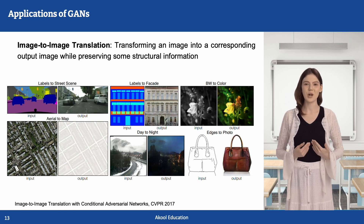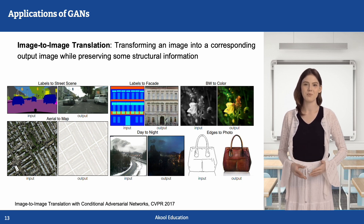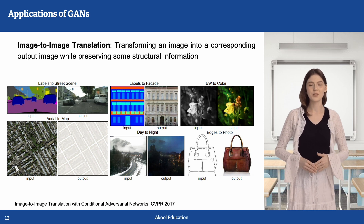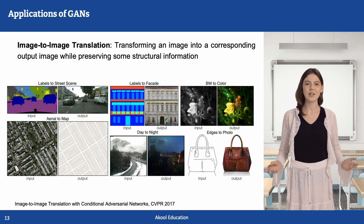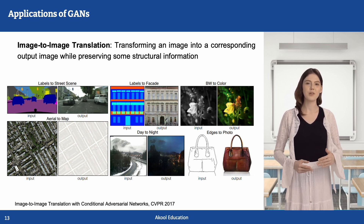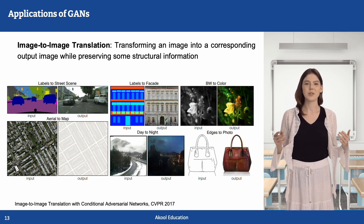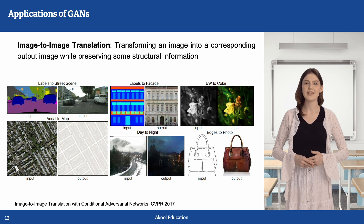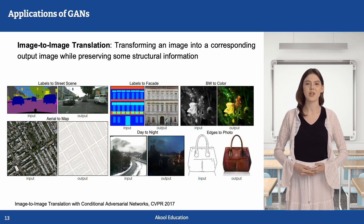Conditional Generative Adversarial Networks extend the standard GAN framework by conditioning both the generator and discriminator on additional information, such as class labels or input images. This allows the model to generate images that adhere to specific constraints, making CGANs particularly useful for image-to-image translation tasks such as converting sketches to realistic images, grayscale to color, or daytime to nighttime scenes. The figure illustrates examples of image-to-image translation obtained by CGAN frameworks.